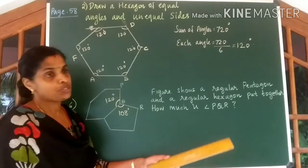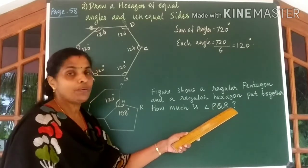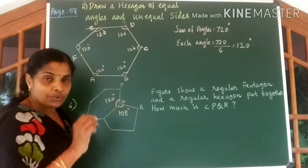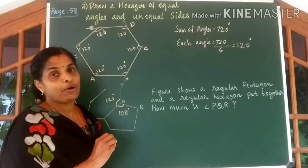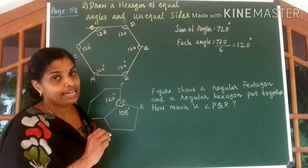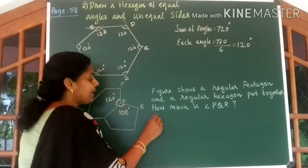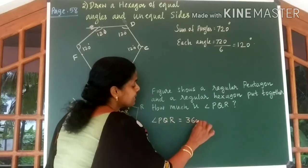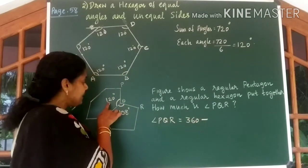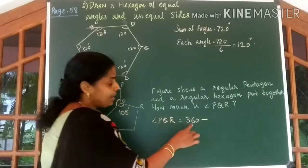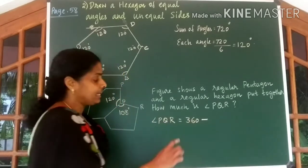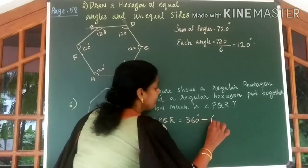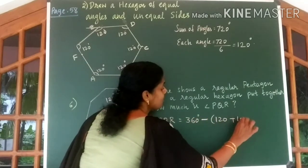Now the question is to find angle PQR. So to get angle PQR, use the idea angle around a point is equal to 360 degrees. So to get angle PQR, it is enough if you subtract the sum of these two angles from 360 degrees. So I wrote 360 degrees minus of 120 plus 108.